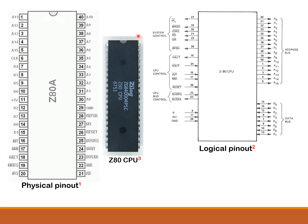At the heart of the MPF-1 microprocessor trainer is the Z80 microprocessor or CPU. The terms CPU and microprocessor are used interchangeably. Here's a picture of the Z80 CPU, and here is a physical pin-out diagram of the Z80. Notice this is pin 1 on the physical pin-out diagram, and it corresponds to pin 1 of the Z80 picture. Pin 2 here corresponds to pin 2 of the picture, and pin 3 of the physical pin-out corresponds to pin 3 of the Z80 picture.